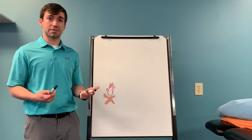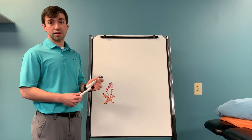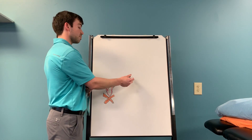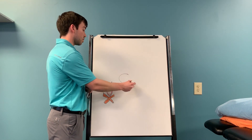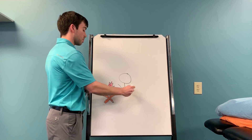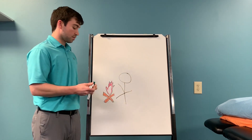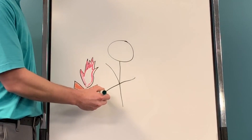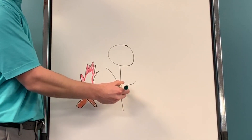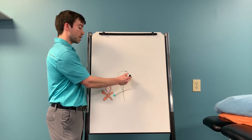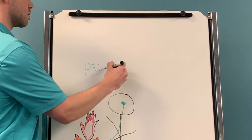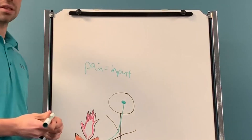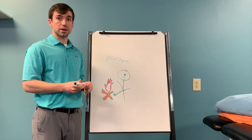So first we're going to talk about the definition of pain. Our pain theory that most of us know comes from the 17th century from a guy called Rene Descartes. You have this person next to a fire here, and when you place that foot up next to this fire, there's going to be a pain signal that comes up to the brain. So in this model, pain is an input to the nervous system.